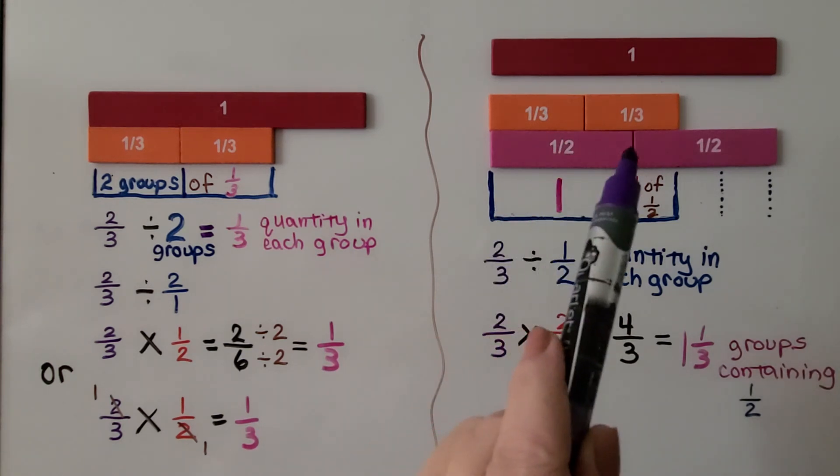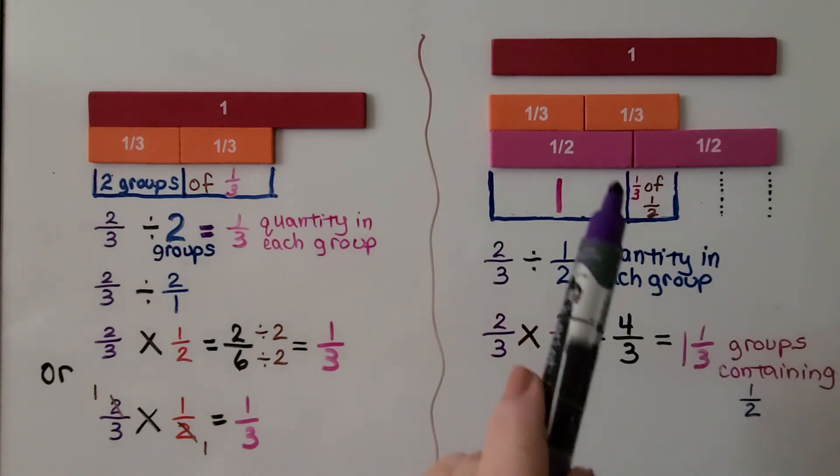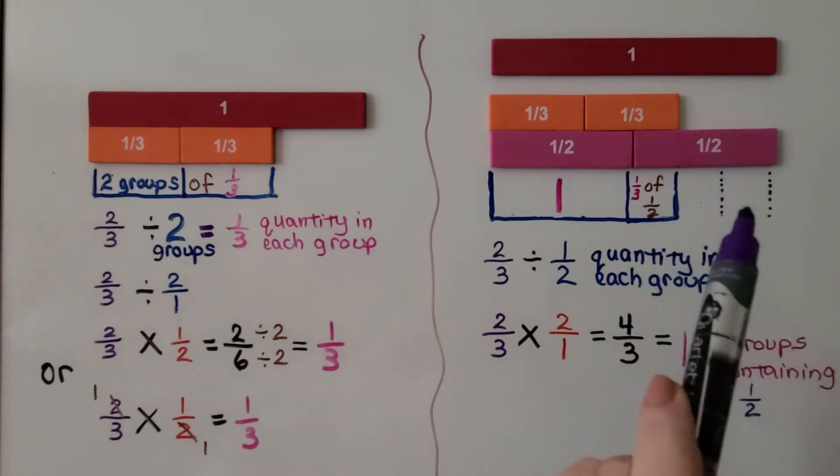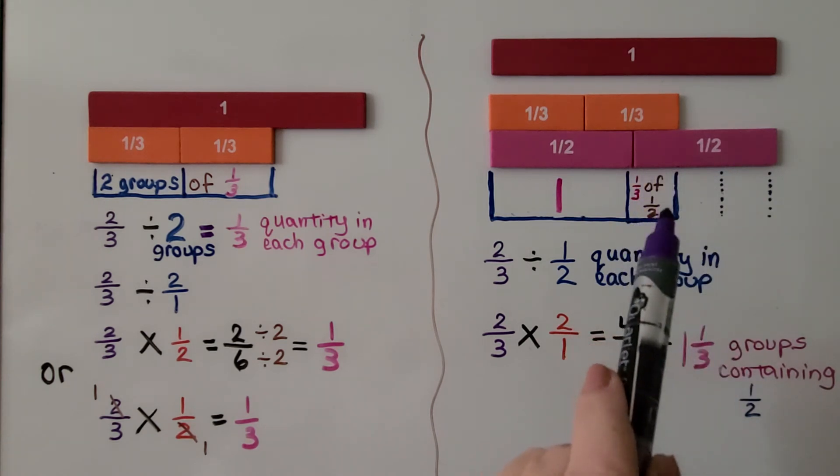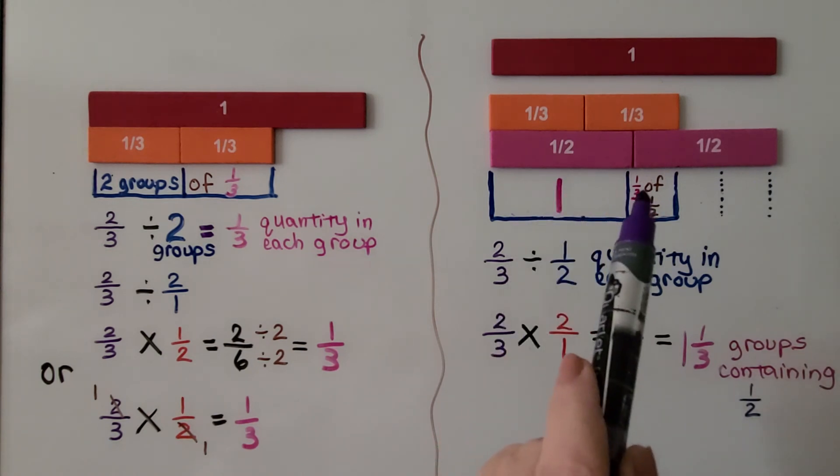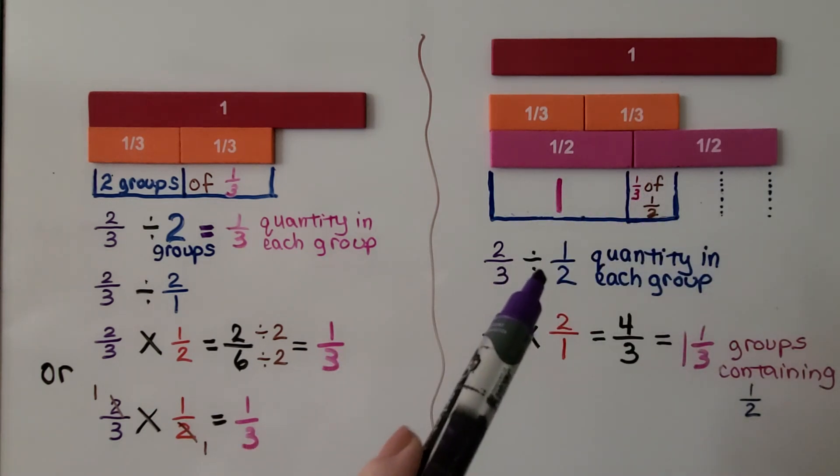So, we have ½ here. And look, if we split this ½ into three equal parts, one of them will help us have 1⅓.